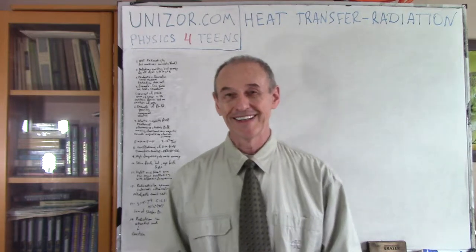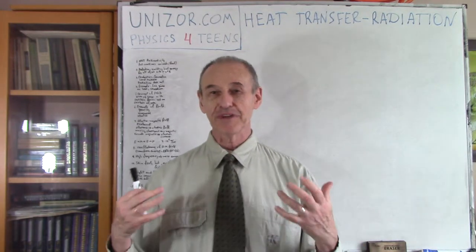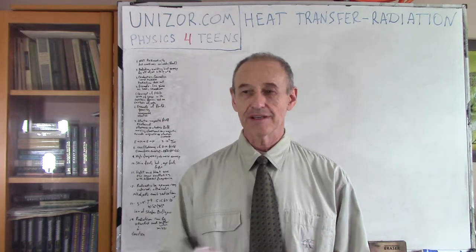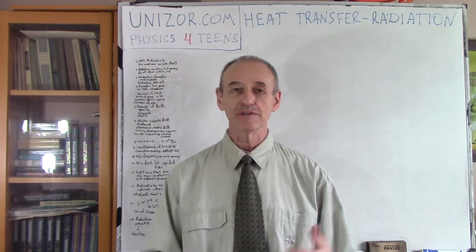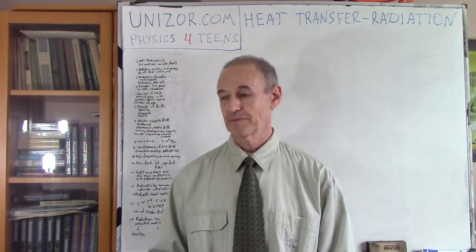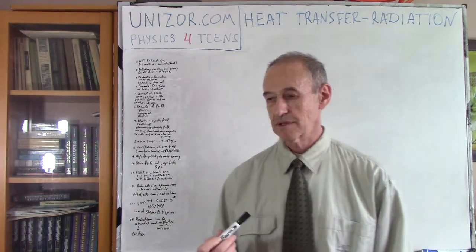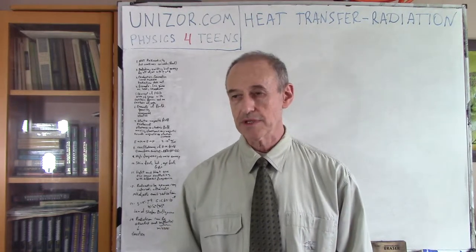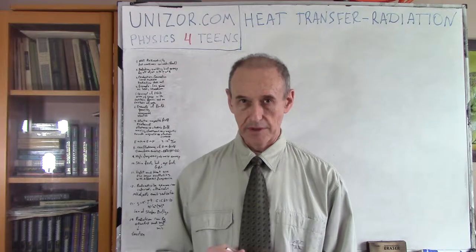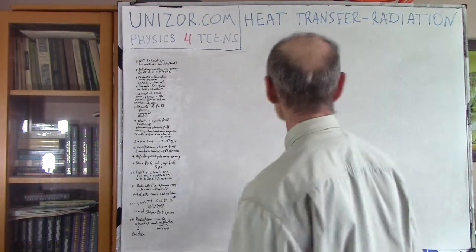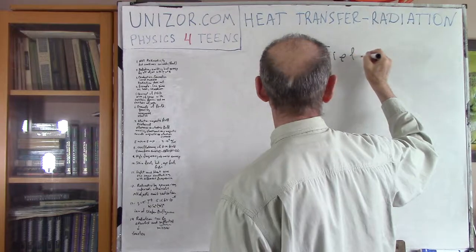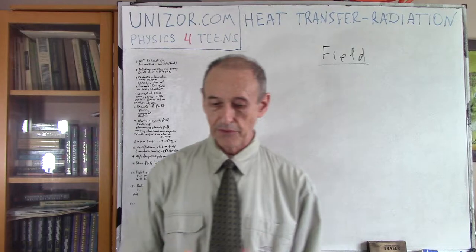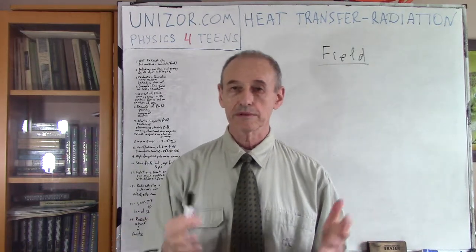So what to do? We have to have some kind of understanding of why radiation and heat are somehow transferred from the sun to the earth. The most significant theory related to this is the field theory — there is a concept of a field. Let's talk about gravity first.